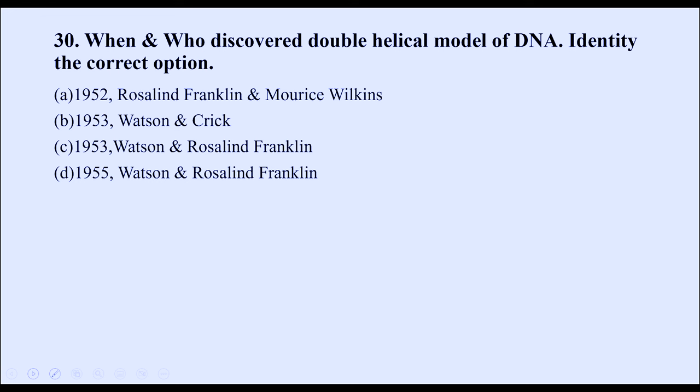When and who discovered the double helical model of DNA? The DNA double helical model was found in 1953. Franklin discovered the X-ray diffraction pattern of DNA. The correct option is B — Watson and Crick model in the year 1953.